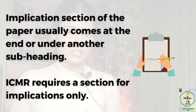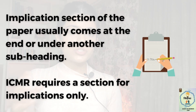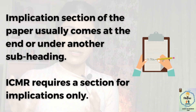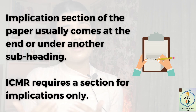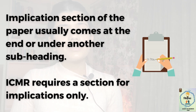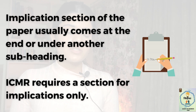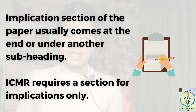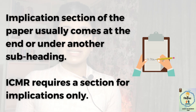The implications section of your paper usually comes either at the end, once you're done writing the results and the discussion, or it can come under another subheading — but this really depends on the body you're writing for. For example, ICMR, in their proposal writing, requires a section on implications only.